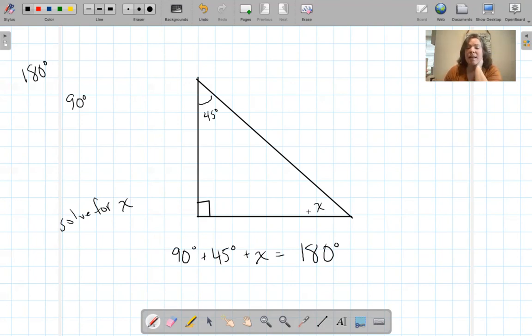So X has to be 45. Because 45 plus 45 is 90 and 90 plus 90 is 180. So X equals 45 degrees.